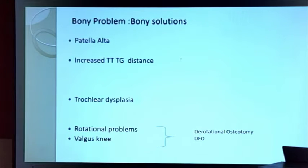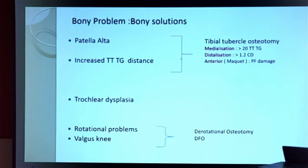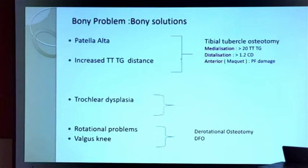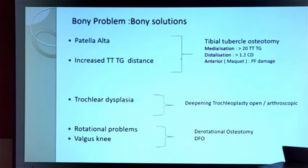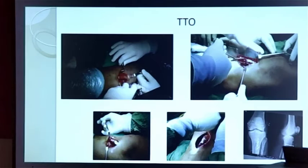For treatment of recurrent patella dislocation: if there is a bony problem, you have to go for a bony solution. If there is patella alta, go for distalization if the CD index is more than 1.2. If there is increased TTTG, go for medialization. If both are present, do distalization as well as medialization. For trochlear dysplasia, I perform open trochleoplasty. For rotational problems in the valgus knee, you need a derotation osteotomy and distal femoral osteotomy.